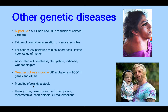Treacher Collins syndrome is an autosomal dominant mutation in the TCOF1 gene, also known as mandibulofacial dysostosis. It presents with hearing loss, visual impairment, cleft palate, macrostomia from deformation of the mandible and face, heart defects, and GI malformations. Notably, these children are born with normal intellectual development — their IQ is normal. That's it for now; thank you for your attention and good luck studying.